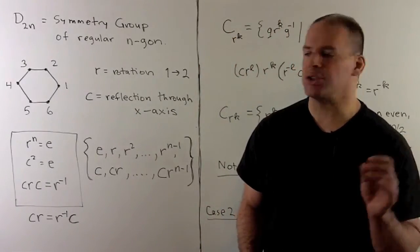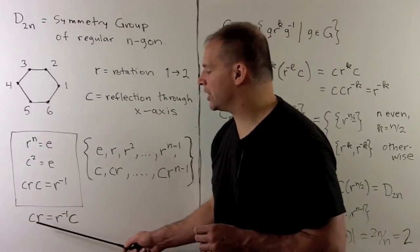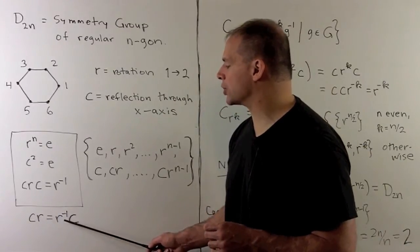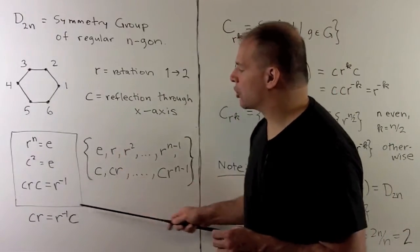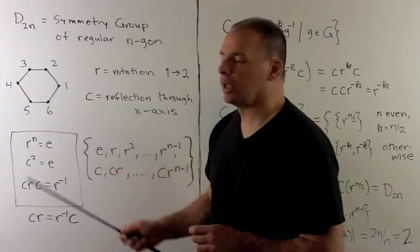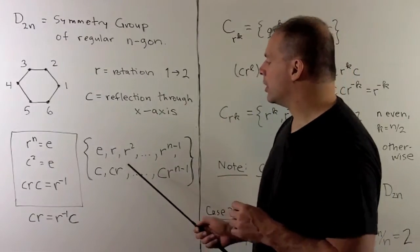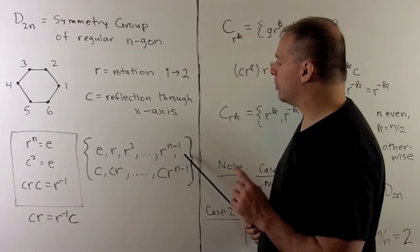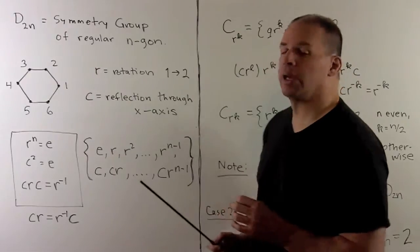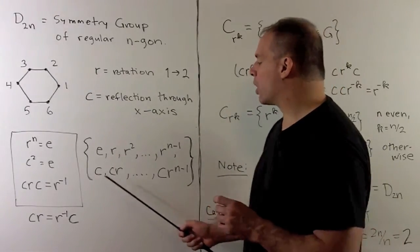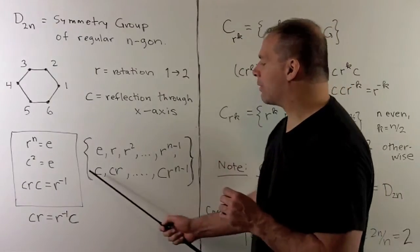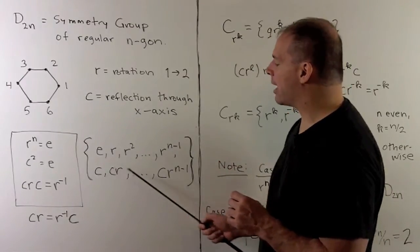In practice, we use that last rule as: if I want to interchange c and r, the r picks up an inverse. This completely describes our dihedral group, and we can write all the elements as so. The first row is our rotation subgroup, normal because it is index 2. Second row are the symmetries given by reflections. These all have order 2.